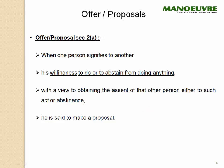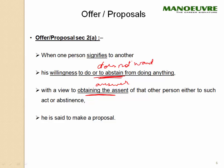Now, what is an offer or proposal? When one person signifies to another his willingness to do or abstain from doing — 'abstain' meaning he does not want to do — anything, with a view to obtaining the assent of that other person either to such act or abstinence, he is said to make a proposal.